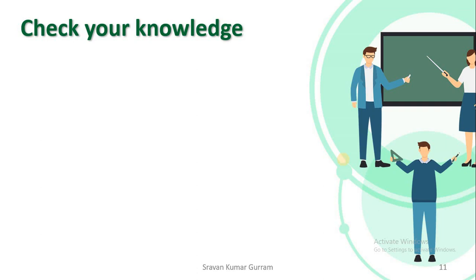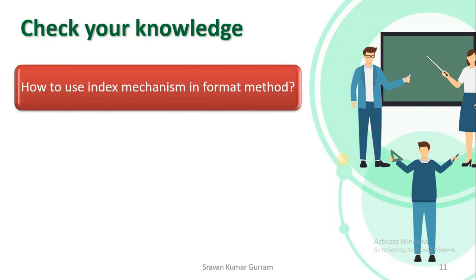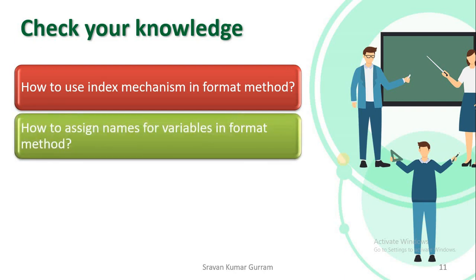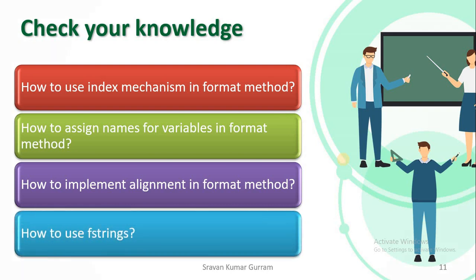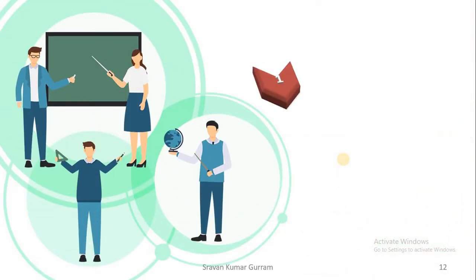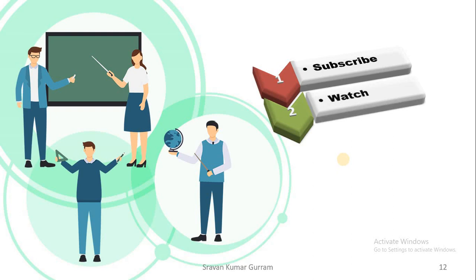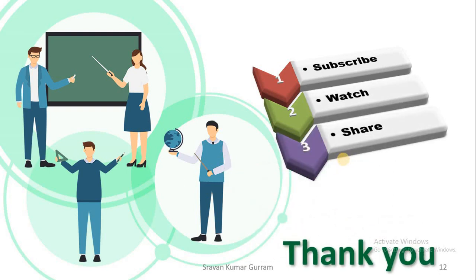Check your knowledge — what we learned from this video: how to use the index mechanism in the dot format method, how to assign names for variables using string dot format method, how to implement alignment using string dot format method, and how to use f-strings. If this video is useful to you, please subscribe to the channel, watch the videos, like and share. Thank you.